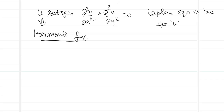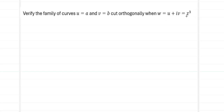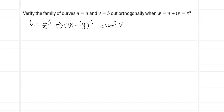Now we apply the second property to a problem: verify that the curves u = a and v = b cut orthogonally when w = u + iv = z³. With w = z³, we have (x + iy)³ = u + iv. We use the expansion formula (a+b)³ = a³ + 3a²b + 3ab² + b³ to expand.